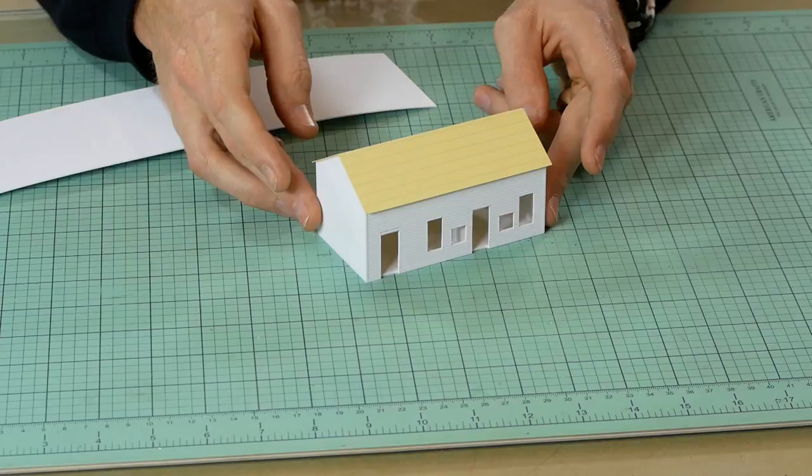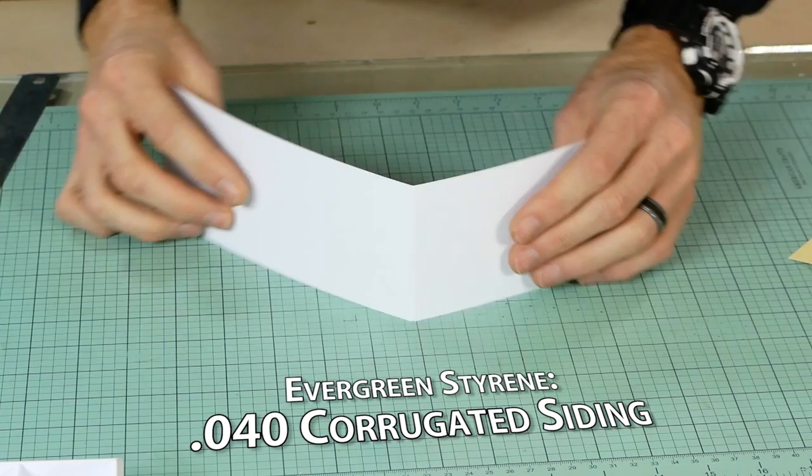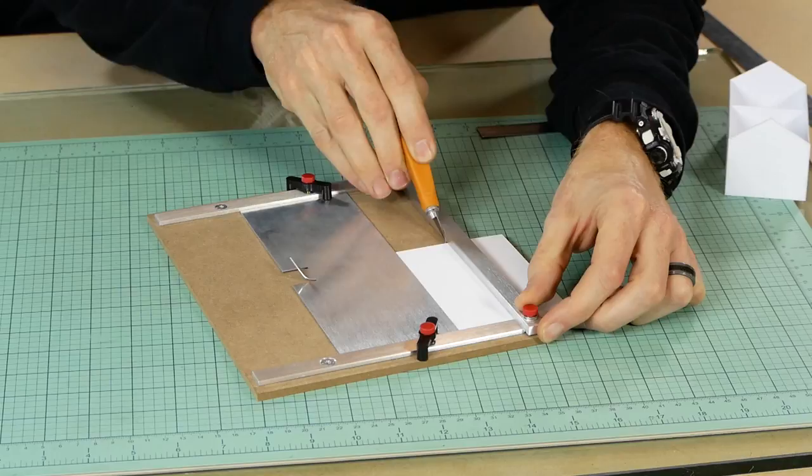Now moving on to the roof. I first measure and fit a roof using cardstock to get a good idea of size and I can also use it as a template. Once happy I measure and cut the roof using 0.04 inch corrugated siding from Evergreen. The duplicated was used to cut the two sides of the roof.